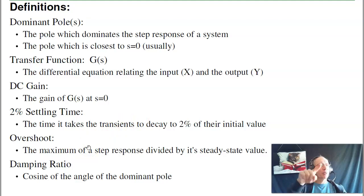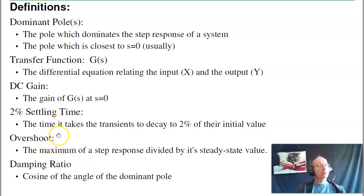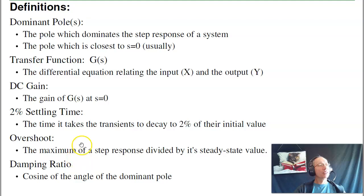Overshoot: if I have a step response, it's how much it overshoots. Sometimes that's really important — for example, an egg polisher should have no overshoot because it'll crack the egg. If your car hits a pothole, you want it to bounce about three times, about 30% overshoot. Typically, when you specify how the system should behave, you specify the overshoot and the settling time. The damping ratio is the angle of the pole — cosine of the angle is your zeta, the damping ratio. The damping ratio tells you the overshoot.